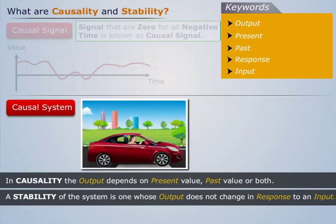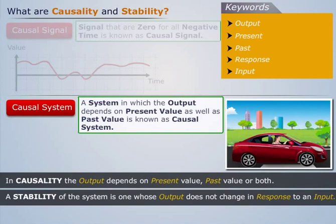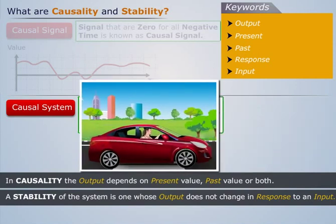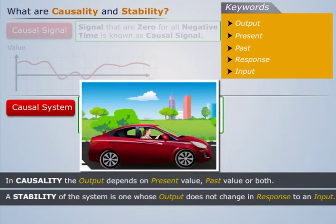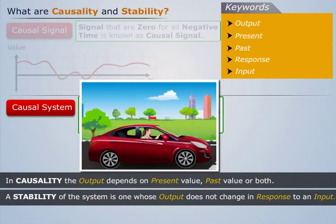Second comes causal system. A system in which the output depends on present value as well as past value is known as causal system. For example, the motion of the car is causal since it does not anticipate the future action of the driver.